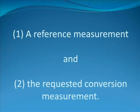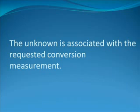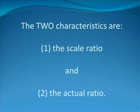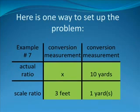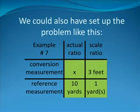What are the two things that are being compared? A reference measurement and the requested conversion measurement. The unknown is associated with the requested conversion measurement. The characteristics are the scale ratio and the actual ratio. On your screen, you see how this problem should be set up in tic-tac-toe format.